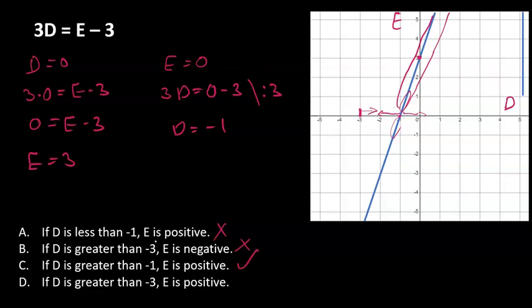Let's see why d is incorrect. If d is greater than minus 3, then e is positive. d greater than minus 3, that's actually almost the same as b. It is not always correct. It is sometimes negative and sometimes positive. Therefore it is incorrect.